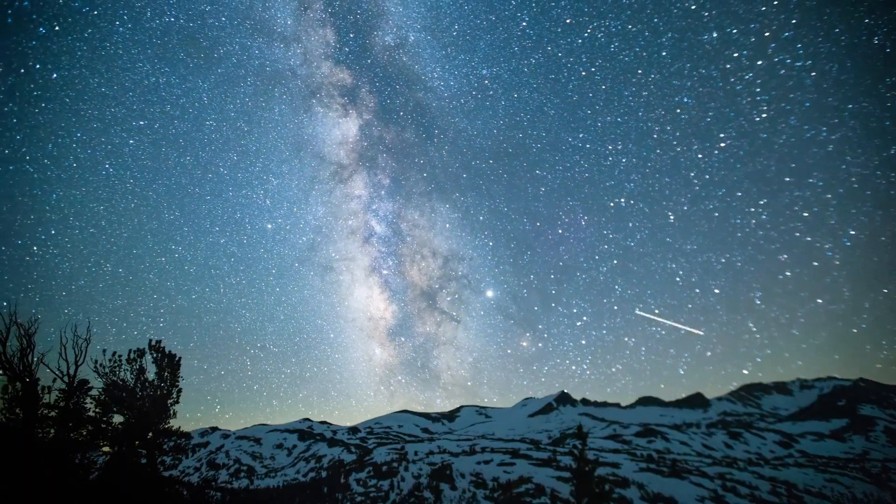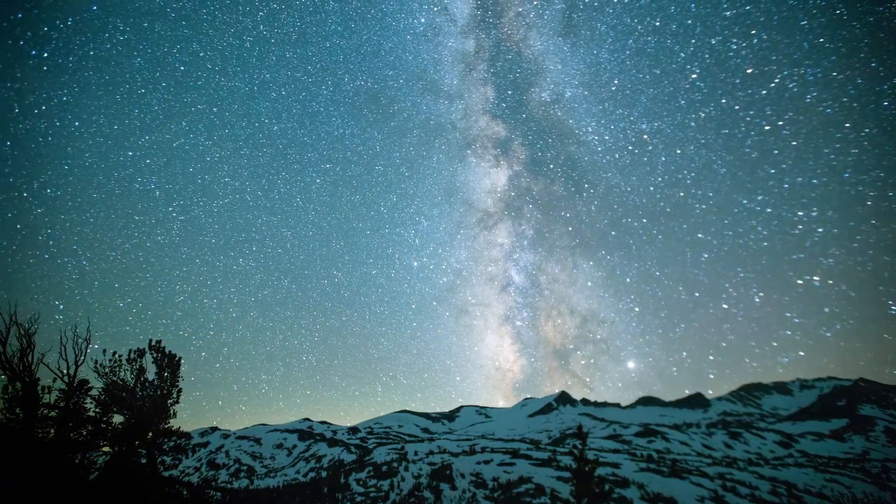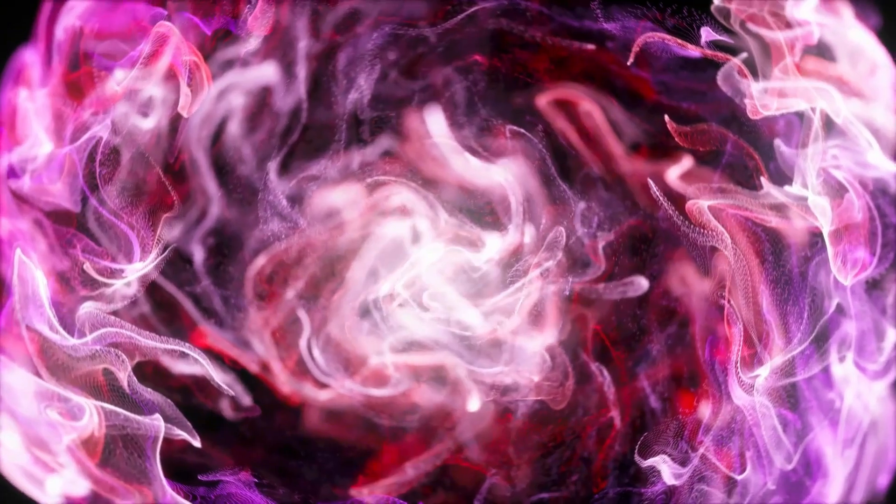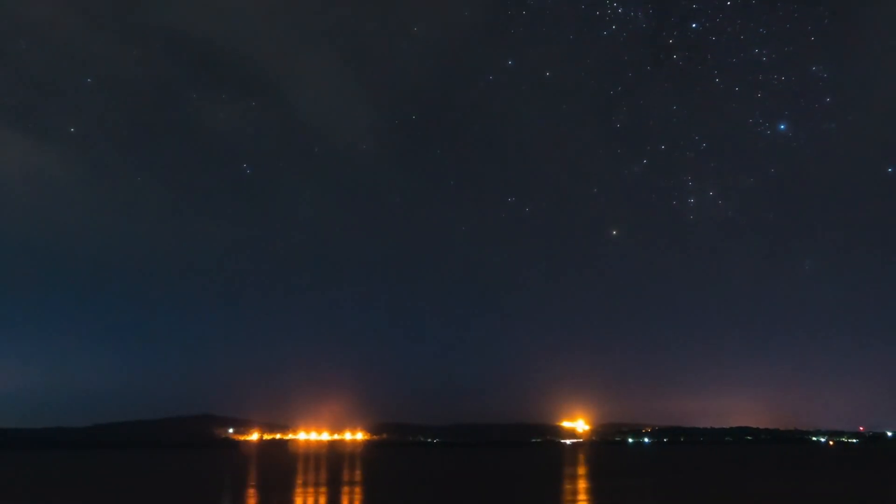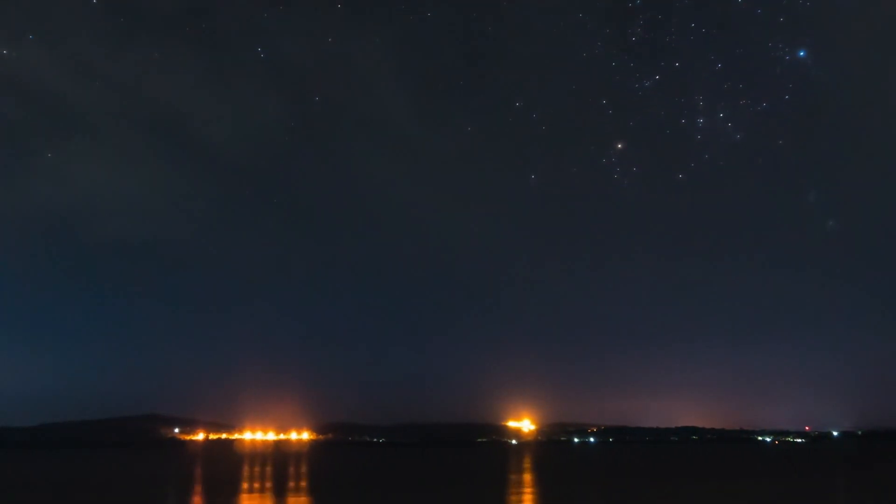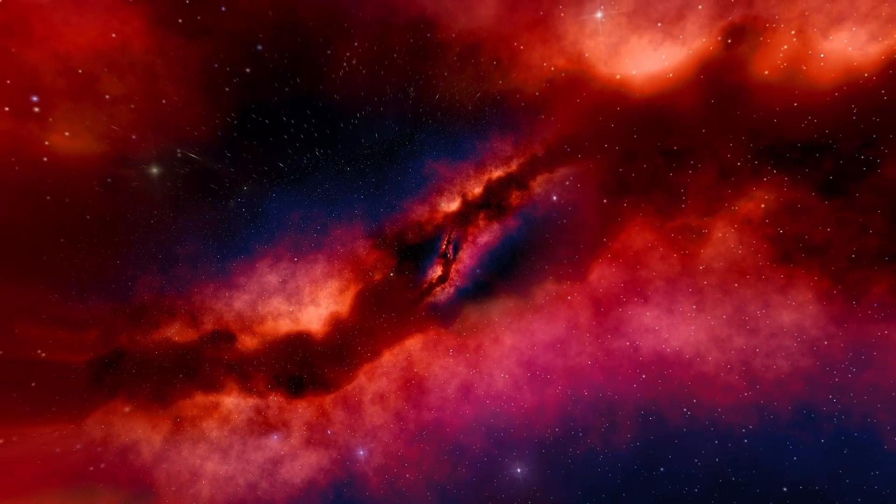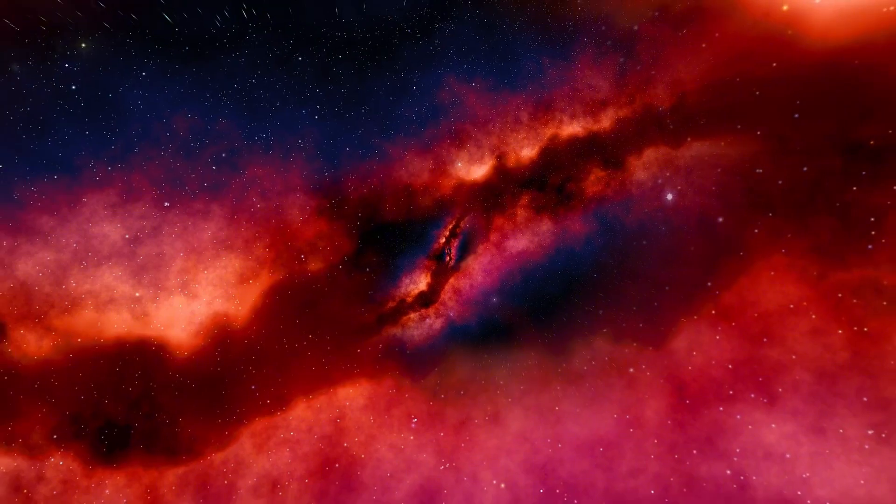When a star undergoes a supernova, it leaves behind remnants, which are the leftover material from the explosion. One notable example is the object known as G292.0 plus 1.8, which is a remnant of a supernova that occurred long ago. These remnants are rare and often contain high concentrations of oxygen and other elements. The Large Magellanic Cloud, where the 1987 supernova occurred, is far enough from Earth to pose no danger, but it serves as a reminder of the powerful forces at work in the universe.